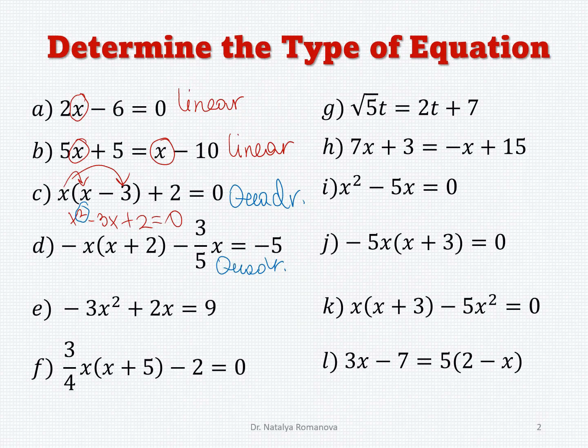Next example: negative 3x squared plus 2x equals 9. The highest value of the exponent equals 2, so this is a quadratic equation.